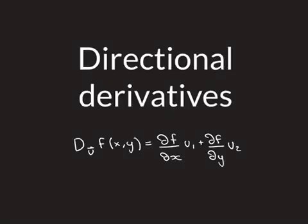For this next video in the playlist on calculus, we're going to grow up a little bit and move to multivariable calculus to discuss directional derivatives. We're going to see why the directional derivative in the direction of unit vector u for a function f of two variables x and y is given by the partial derivative of f with respect to x times the x-component of u, plus the partial derivative of f with respect to y times the y-component of u.